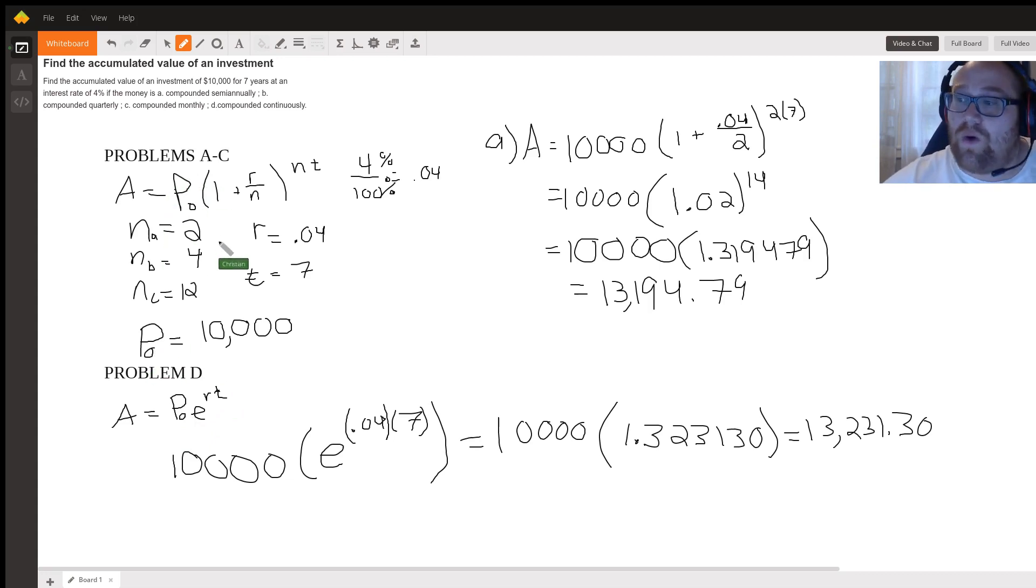This is multiplied by one plus the interest rate of 4% divided by n, where n is going to be a number. For example, in part A, n is 2 because you're splitting the year in two. For part B it's going to be 4 because it's quarterly, and for part C it's 12 because there's 12 months in a year.